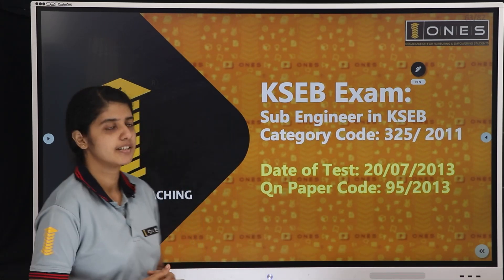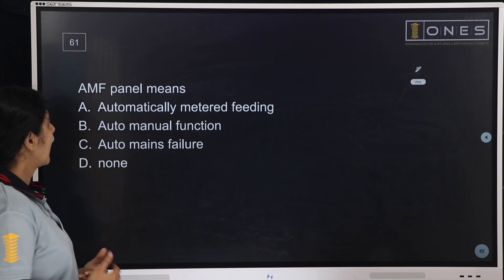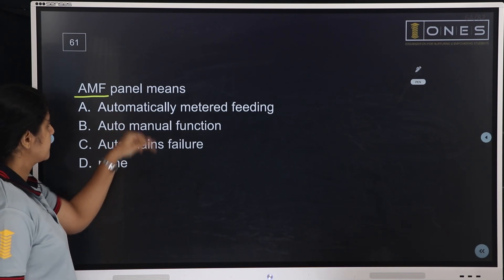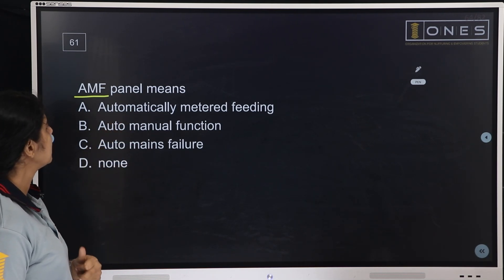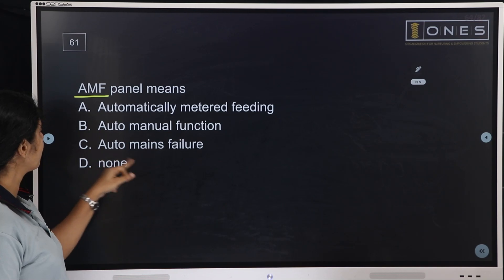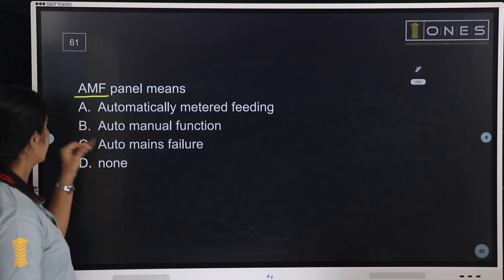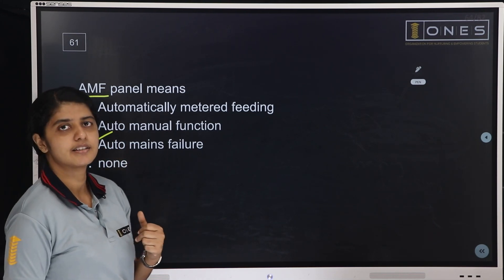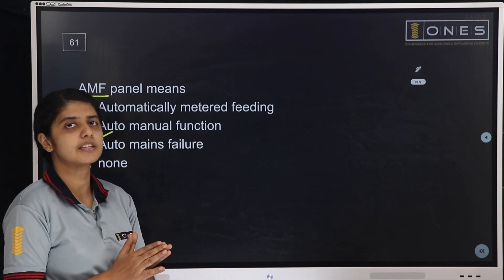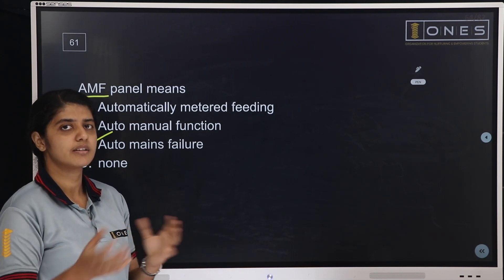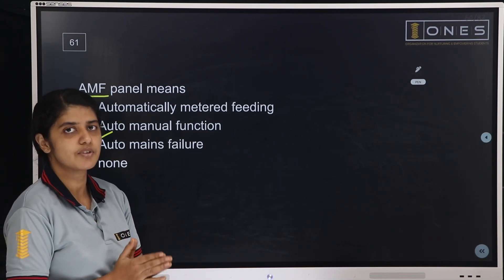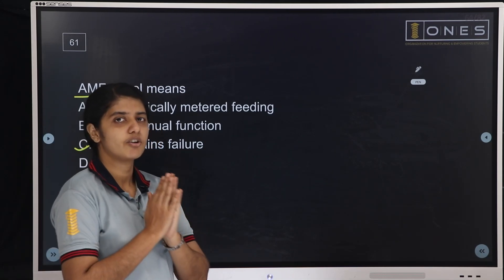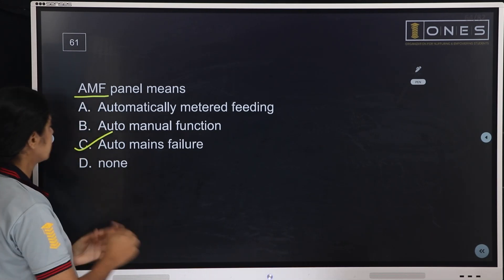Part 4, first question: AMF panel means? Options: Automatically Metered Feeding, Auto Manual Function, Auto Mains Failure, or None. Option C is not 'Auto Means Failure' — at the time of a power failure, a standby generator kicks in via the automatic transfer switch. This is the AMF panel — AMF stands for Automatic Mains Failure. This is the name of the automatic transfer switch.